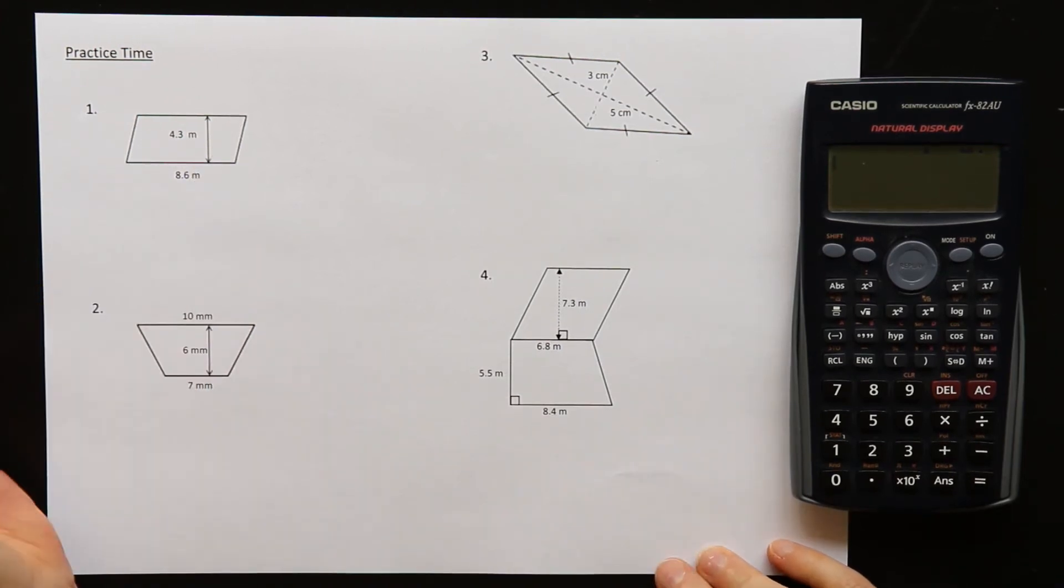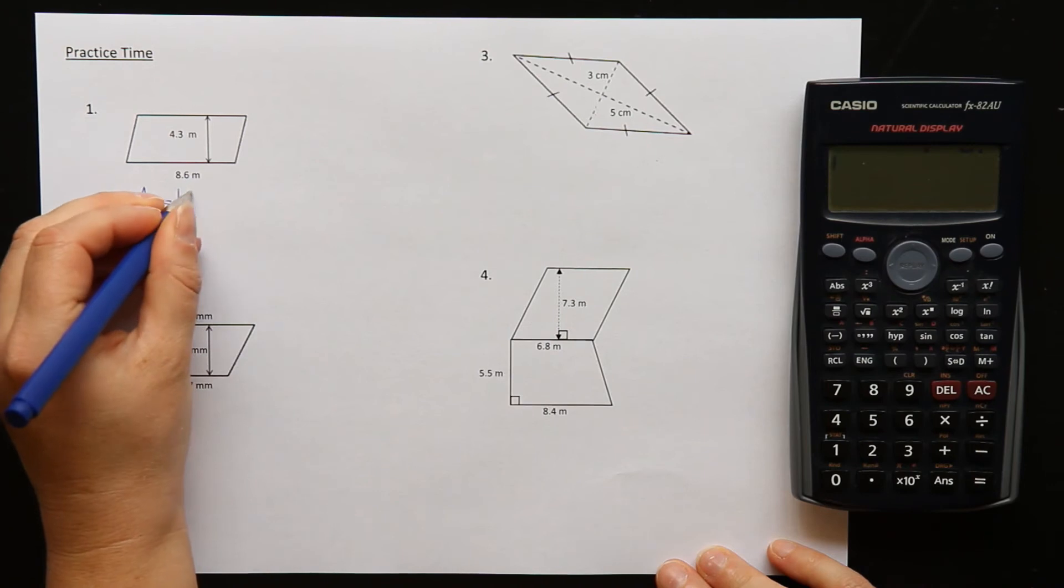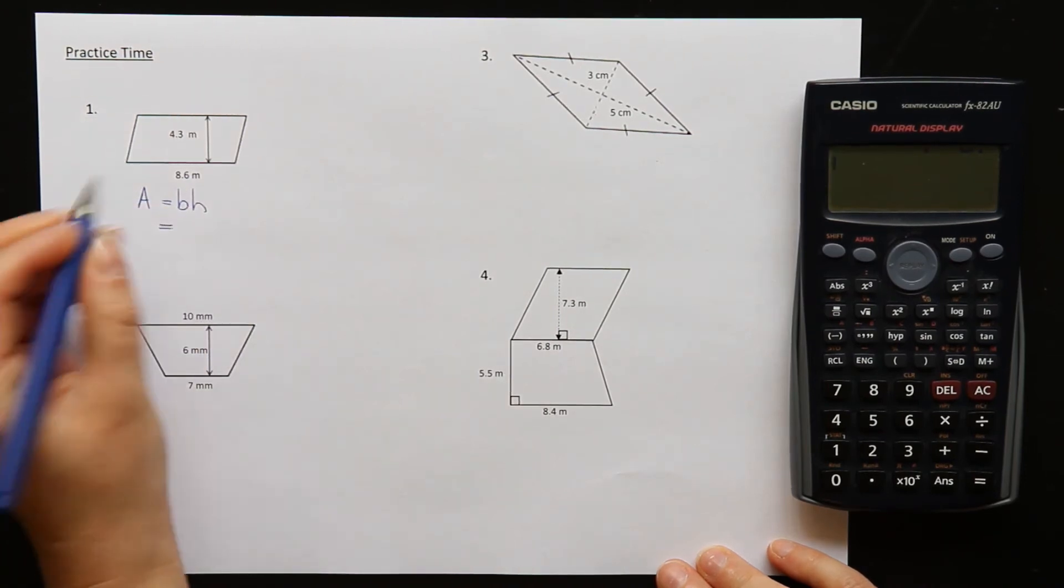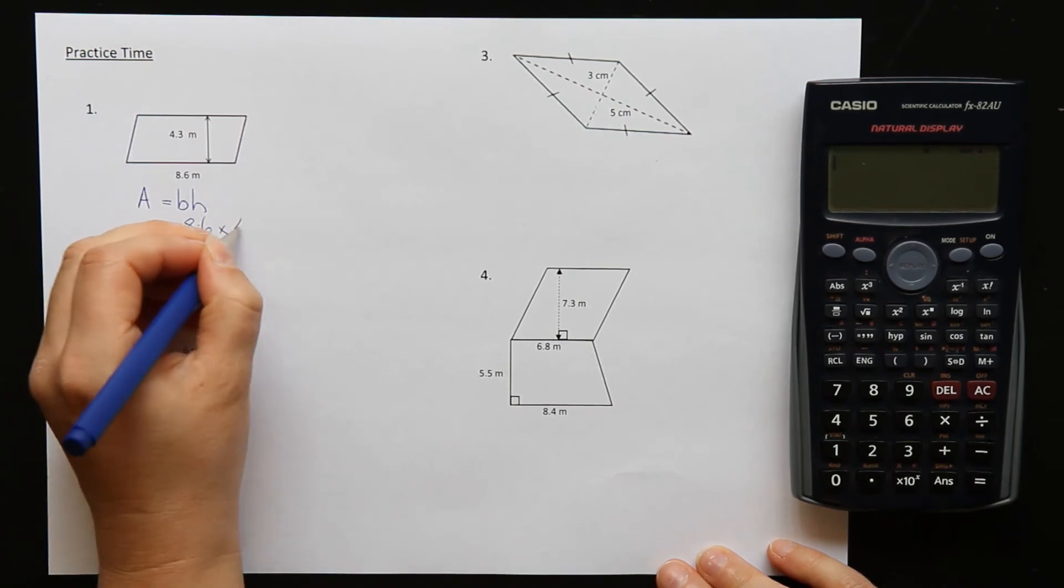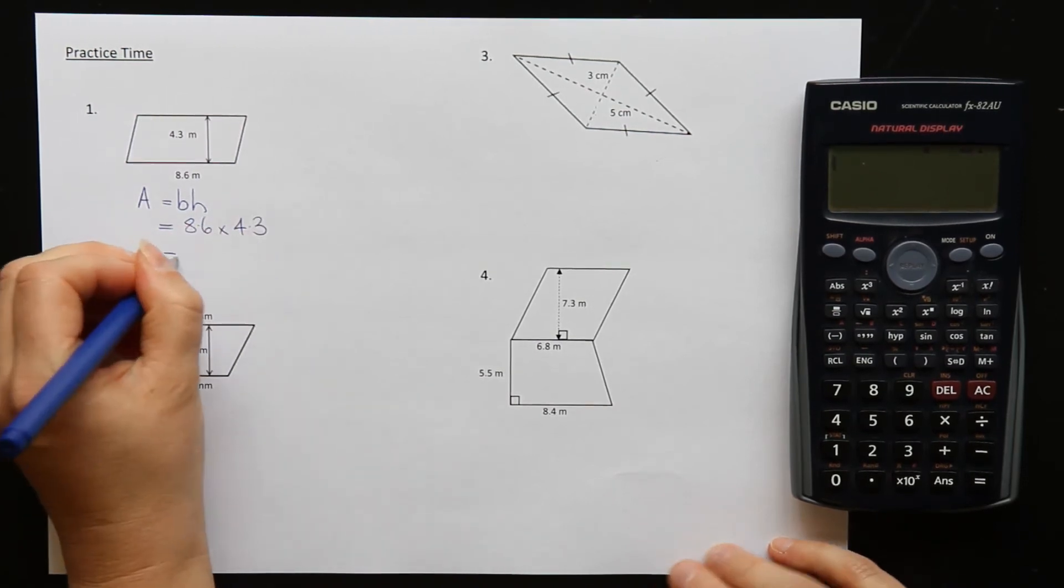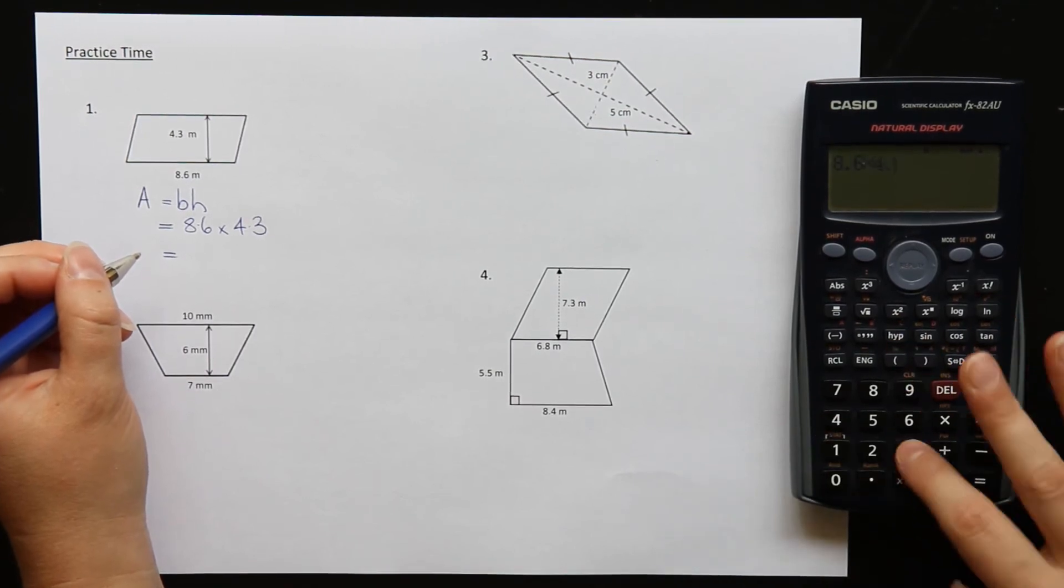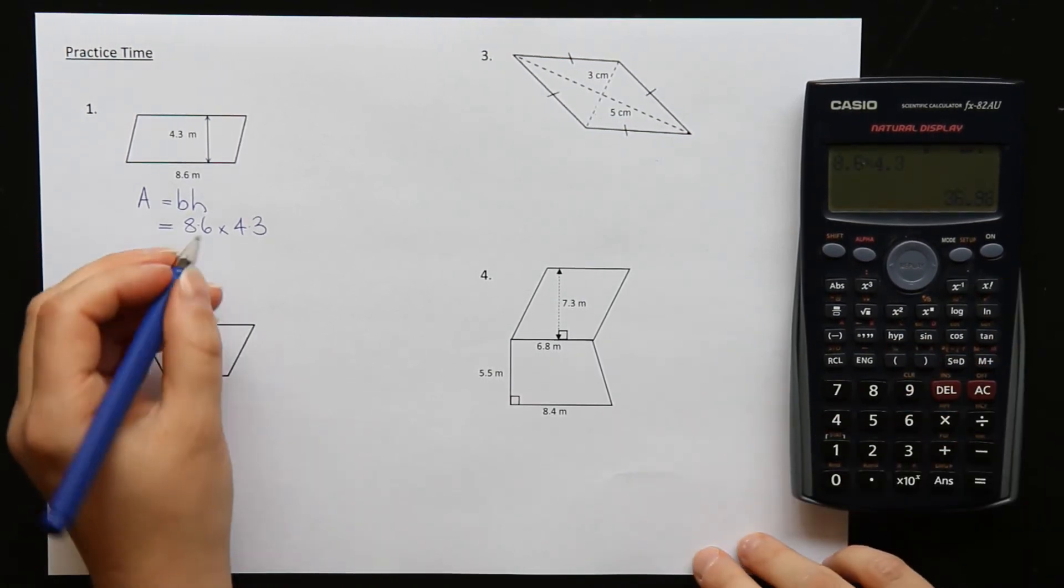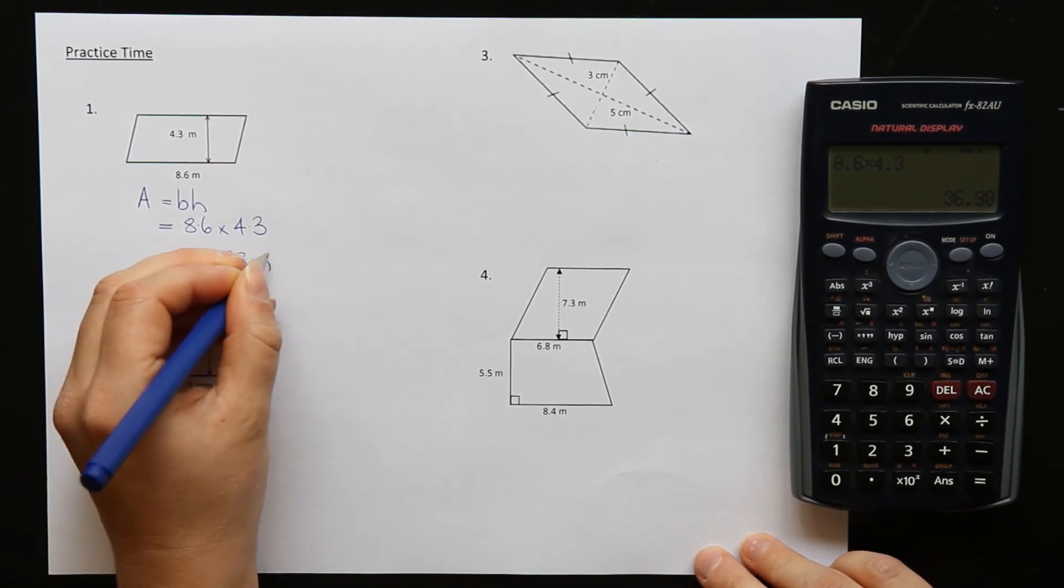Question one. We're starting with a parallelogram. So the formula is A is equal to BH. The base is 8.6 and the height is 4.3. Times them together, 8.6 times 4.3 is 36.98 meters squared.